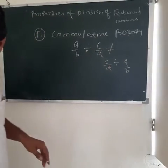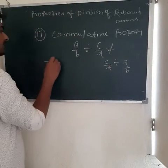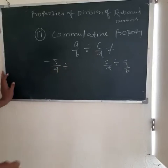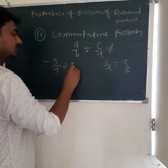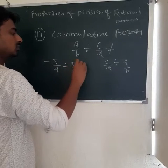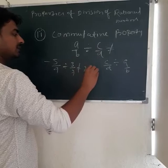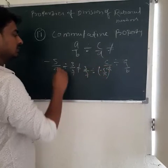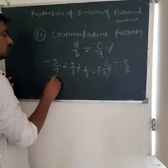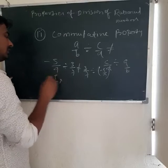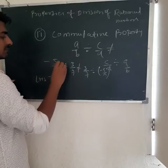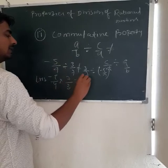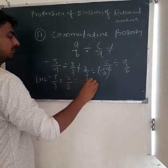For example, minus 5 upon 4 divided by 3 upon 7 is not equal to 3 upon 7 divided by minus 5 upon 4. Now find the LHS: minus 5 upon 4 multiplied by 7 upon 3 equals minus 35 upon 12.